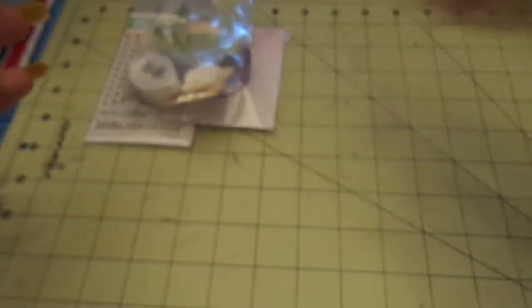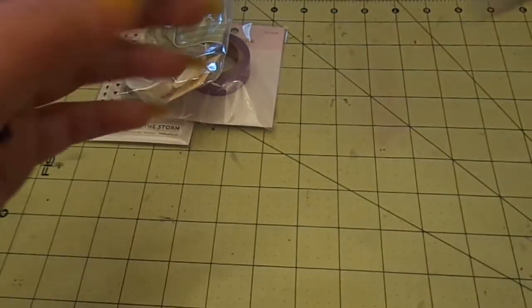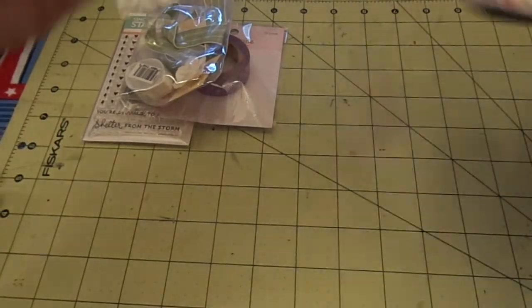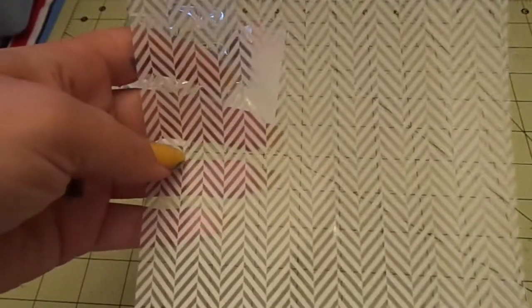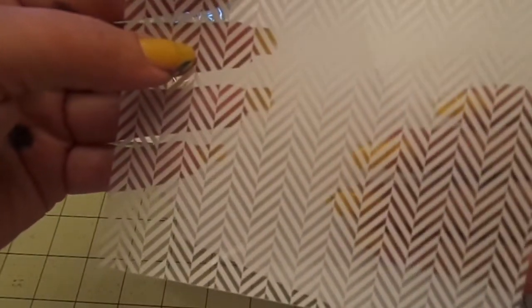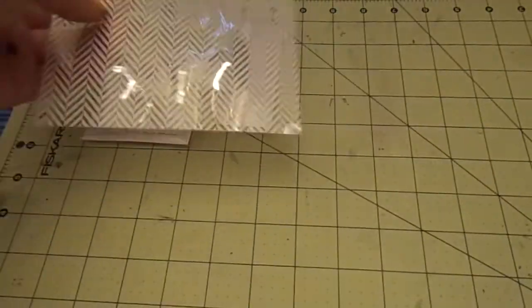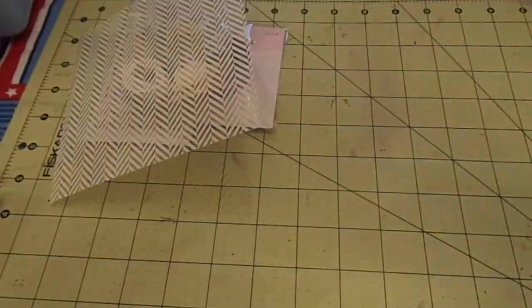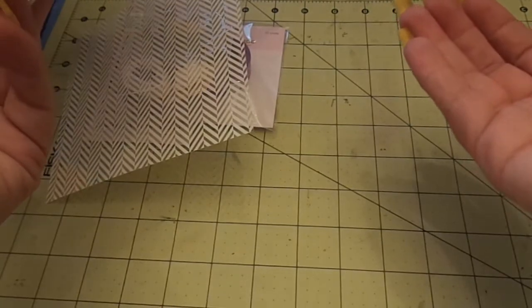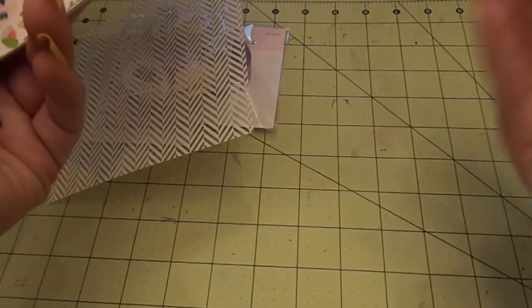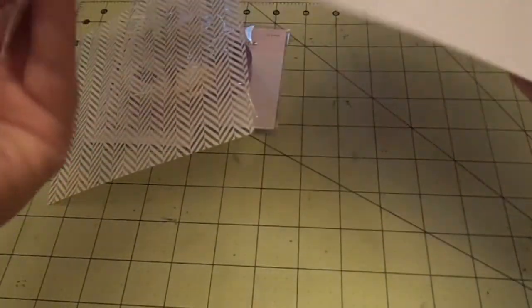And then this is a piece of transparency with this white chevron. There we go. I love that. And then the 6x6 papers are the only Lawn Fawn paper pad I don't have yet. So how awesome is that? It's the Lawn Fawn bright side and I don't have these.